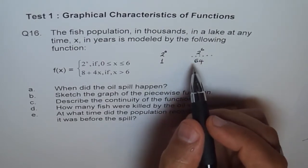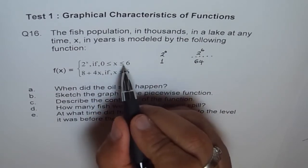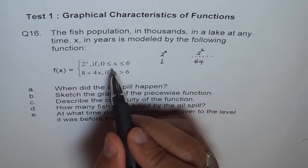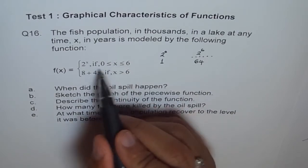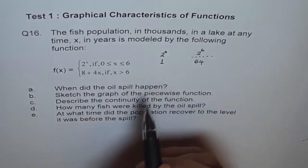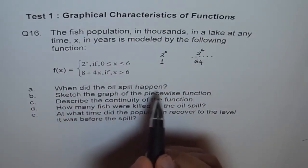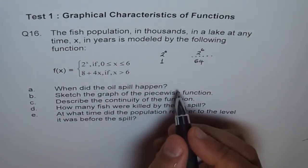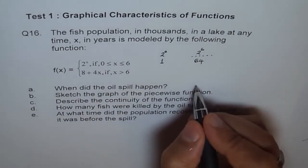That is the population. These things are included in the first part of our piecewise function when x is between 0 to 6, both included. Now at this time, the oil spill happens. When did the oil spill happen? It happened after 6 years. So the answer is 6 years.